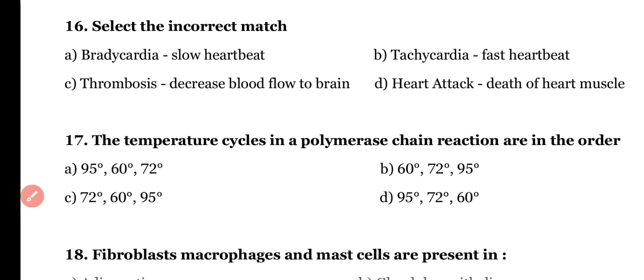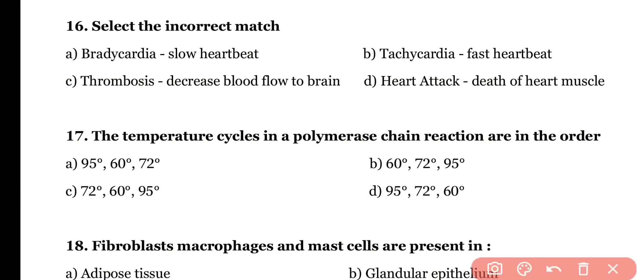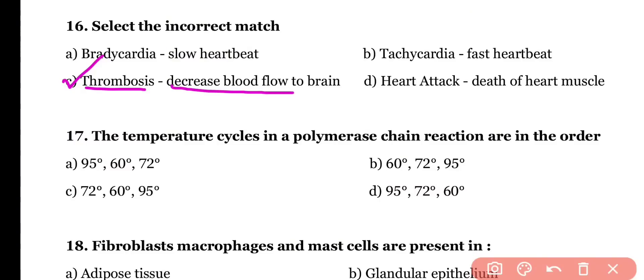Question number sixteen: select the incorrect match — (a) bradycardia means slow heartbeat, (b) tachycardia means fast heartbeat, (c) thrombosis means decreased blood flow to the brain, or (d) heart attack means death of heart muscle. The correct answer is option C — thrombosis means a clot in blood vessels causing decreased blood supply, not increased, so that match is incorrect.